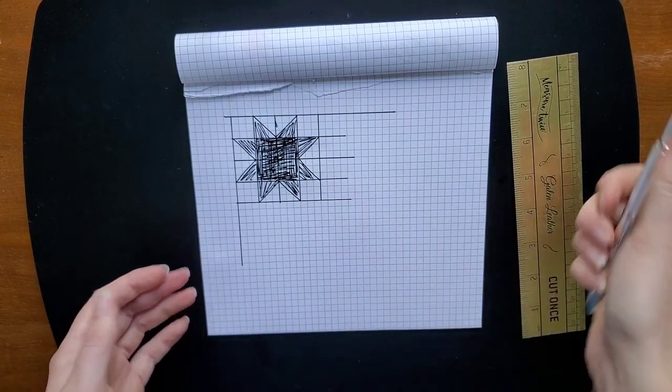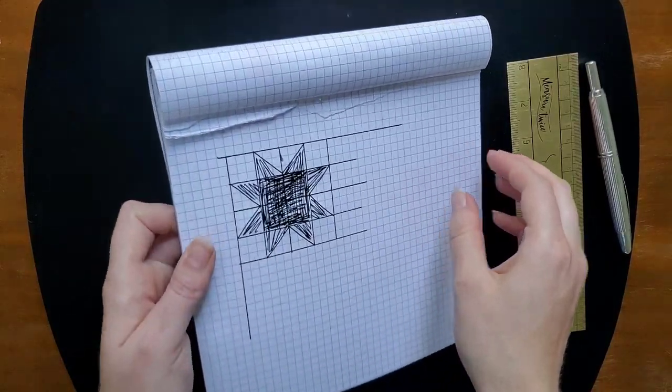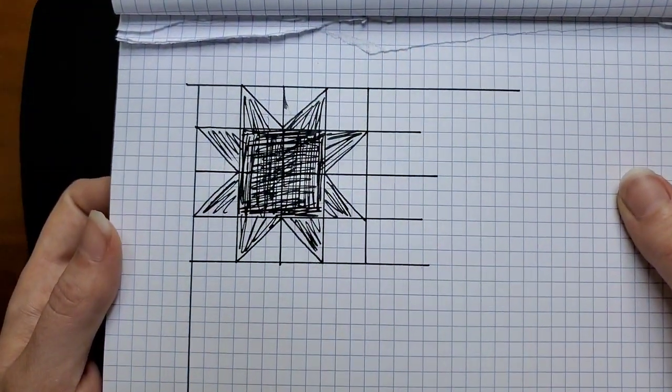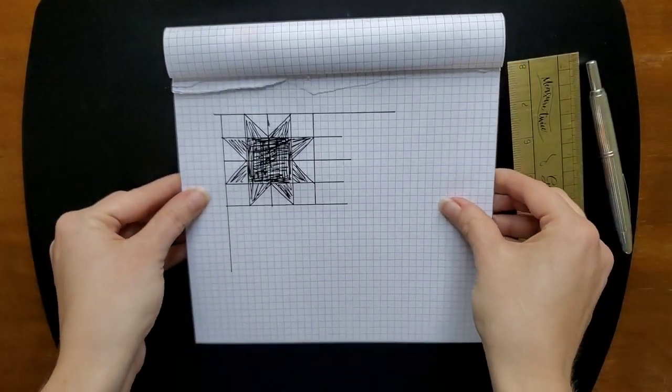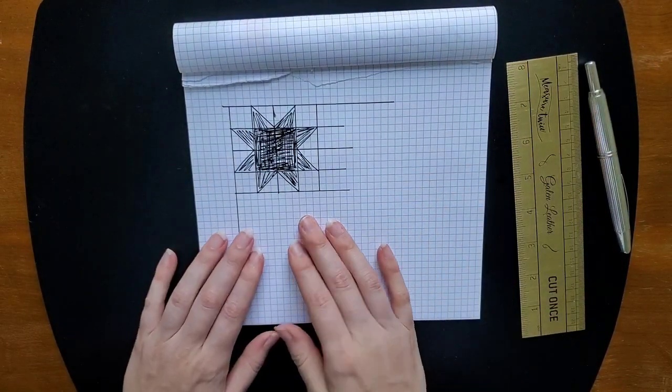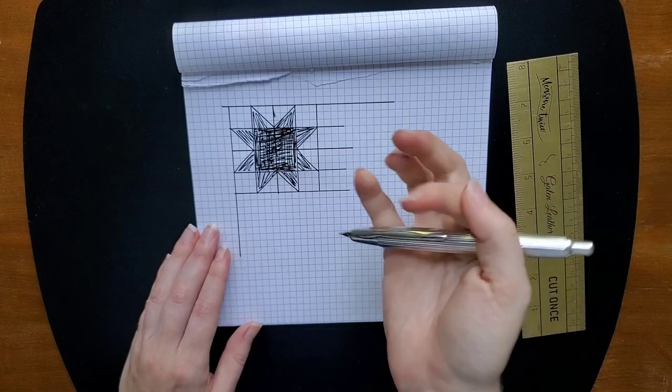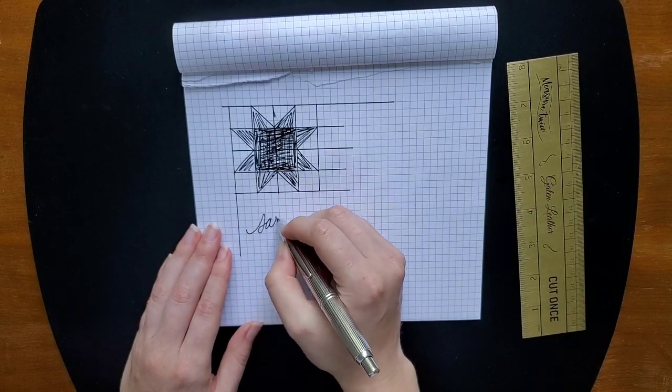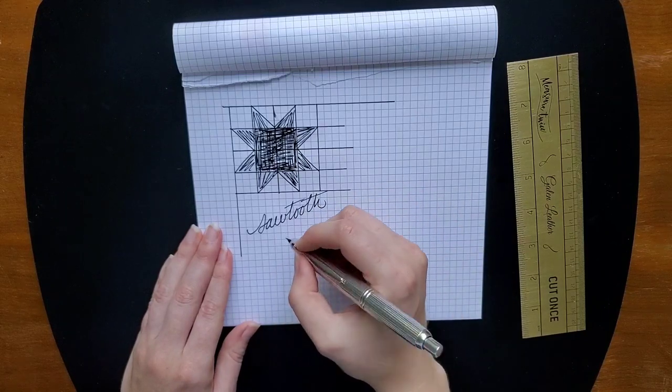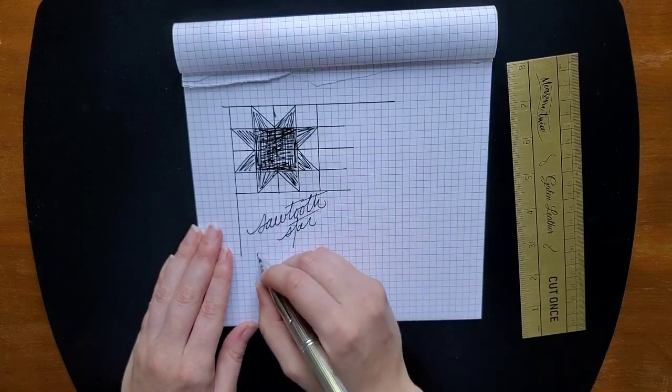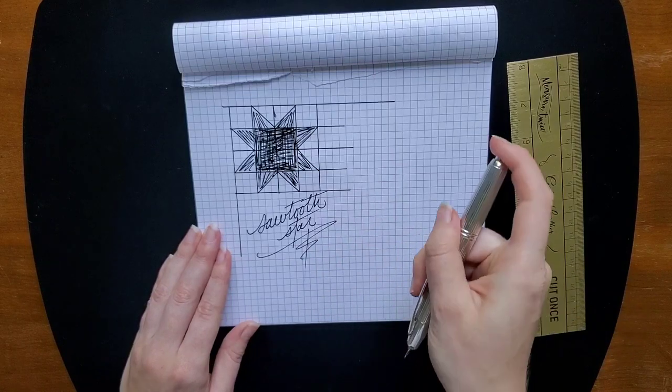So that's pretty much it. That is a traditional sawtooth star quilt block. This can be beginner to beginner intermediate level to construct. I have done a lot of sawtooth star quilts in my time. It's one of my absolute favorite designs.